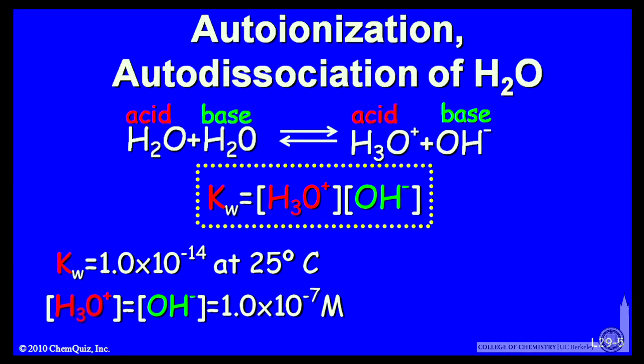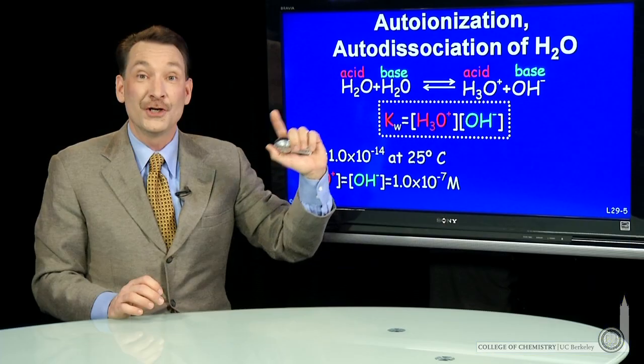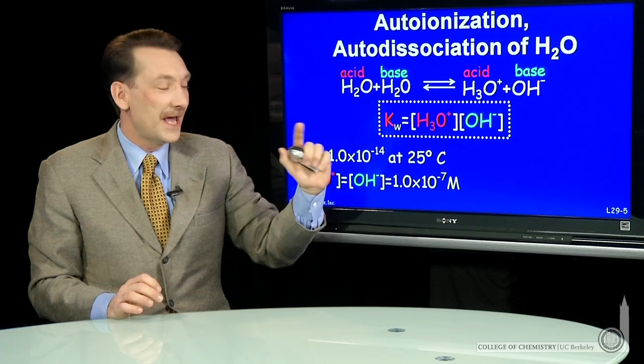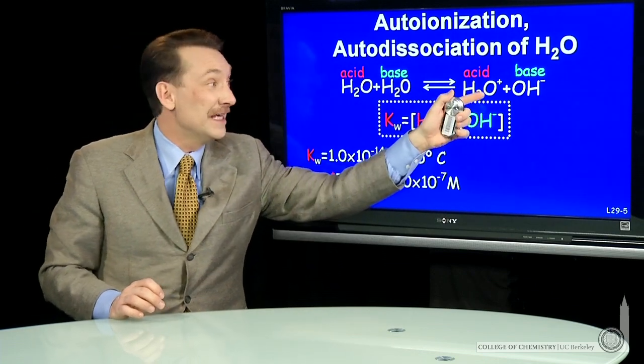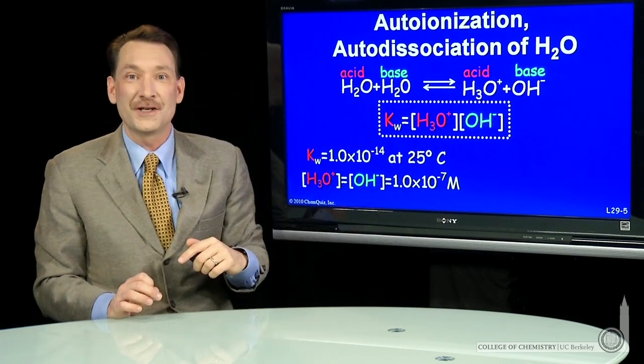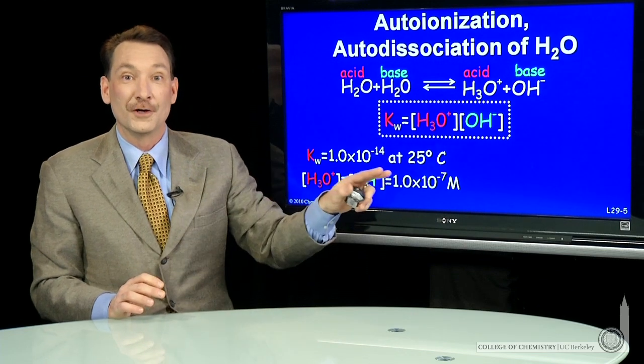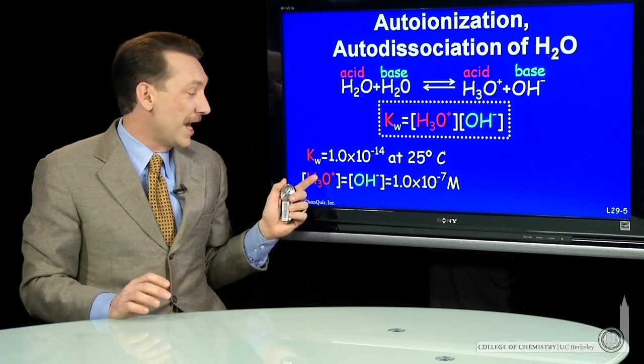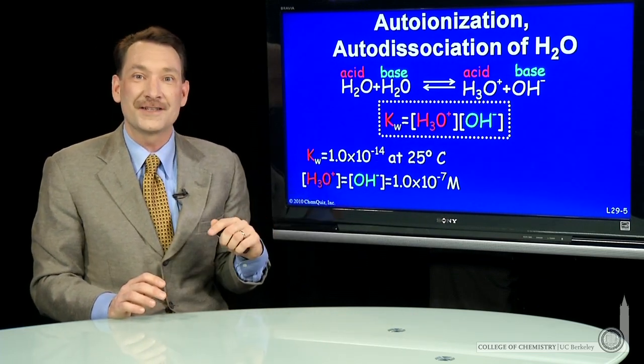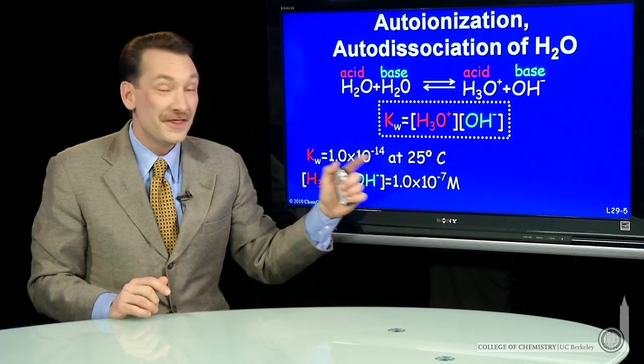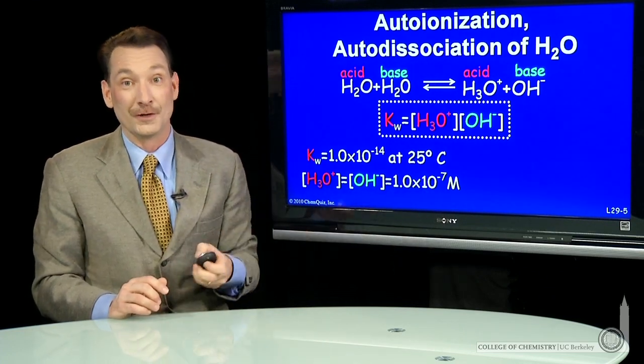Here we have H3O+ and OH- both equal 10 to the minus seventh. That would be if I had pure liquid water, and I allowed them to dissociate, you'd have equal amounts of H3O+ and OH-. So pure liquid water in equilibrium, the H3O+ and OH- concentrations are equal, and they're very small, 10 to the minus seventh molar.